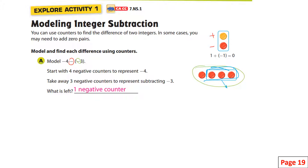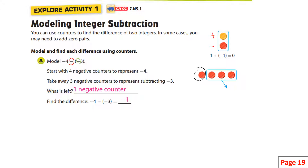There's only one negative counter left. That is the only negative counter left out, so that's the answer. Negative four take away negative three is negative one. Four negatives take away three negatives is one negative.